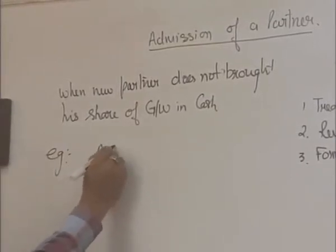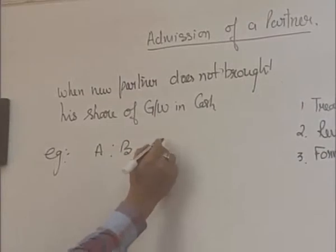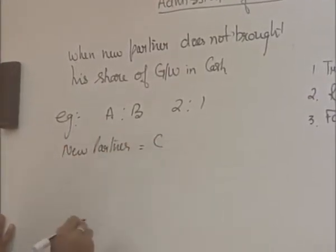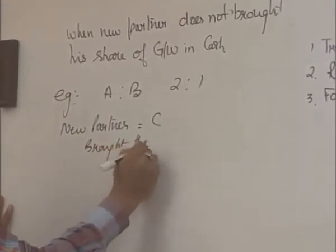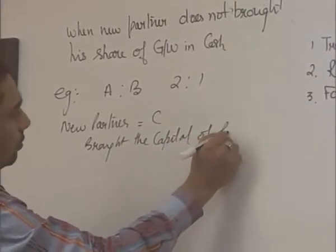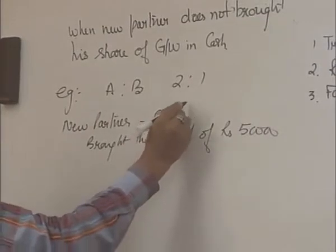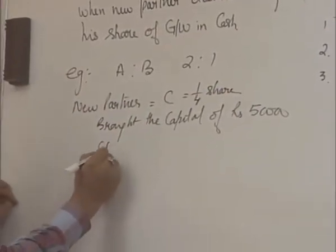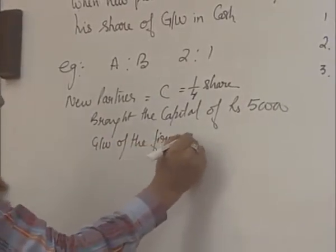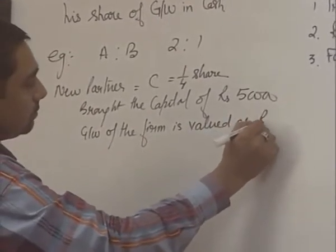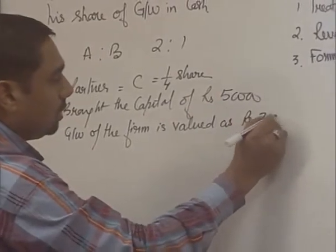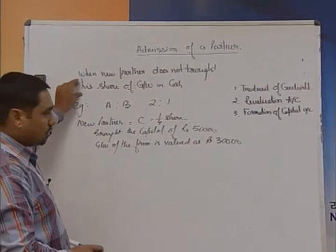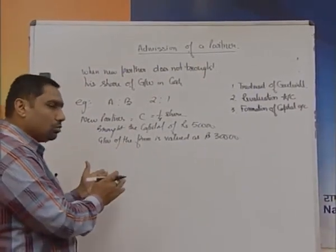We will take an example. Suppose there are two partners A and B sharing profit in the ratio 2:1. They admit a new partner C, who is going to bring capital of rupees 50,000 and C is going to join the business for a one-fourth share. On the admission of C, goodwill of the firm is valued at rupees 30,000. Our condition is when the new partner does not bring his share of goodwill in cash.